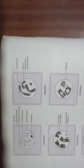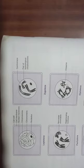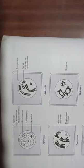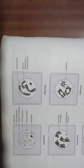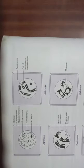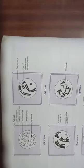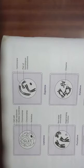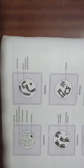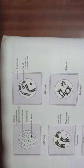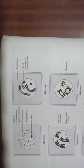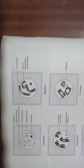After Prophase I comes Metaphase I. The homologous chromosomes arrange themselves at the equator of the spindle. You can see that the chromosomes have arranged themselves at the equator, and the spindle gets attached to the centromere of the chromosomes.